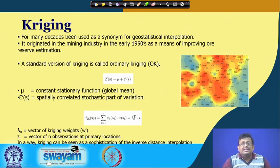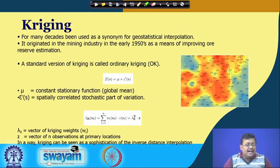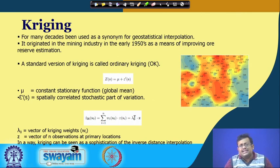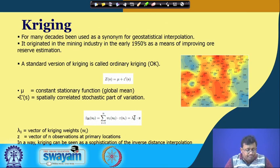Kriging is another name for geostatistical interpolation. It is more scientific — a sophistication of IDW. It originated in the mining industry in the early 1950s as a measure of improving ore reserve estimation. A standard version is called ordinary Kriging, and there are several other types: universal Kriging, indicator Kriging, co-Kriging, and regression Kriging.